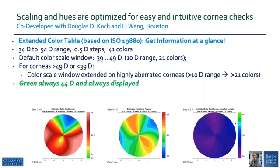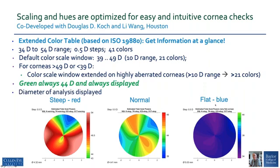Here are three representative maps. In the middle is a normal cornea with a moderate amount of astigmatism — green at 44 diopters — and the typical span of 39 to 49 covers this cornea adequately. On the left is a very steep cornea where green appears near the very bottom of the scale to orient the clinician that this is a steep cornea. On the right is a flat cornea shown in blue, but by displaying 44 diopters in green it still orients the clinician. The diameter of the analysis is always displayed, shown here with blue rectangles, so the clinician knows what portion of the cornea has been measured with the three-zone LEDs.